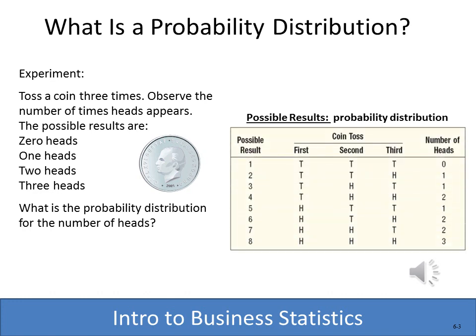Now we're actually seeing a probability distribution. Here are the eight possible results and the number of heads we could get with each possible result. It is possible we could get no heads at all, and tossing a coin three times it is possible that all three could be heads. So we could get zero heads, one head, two heads, or three heads.